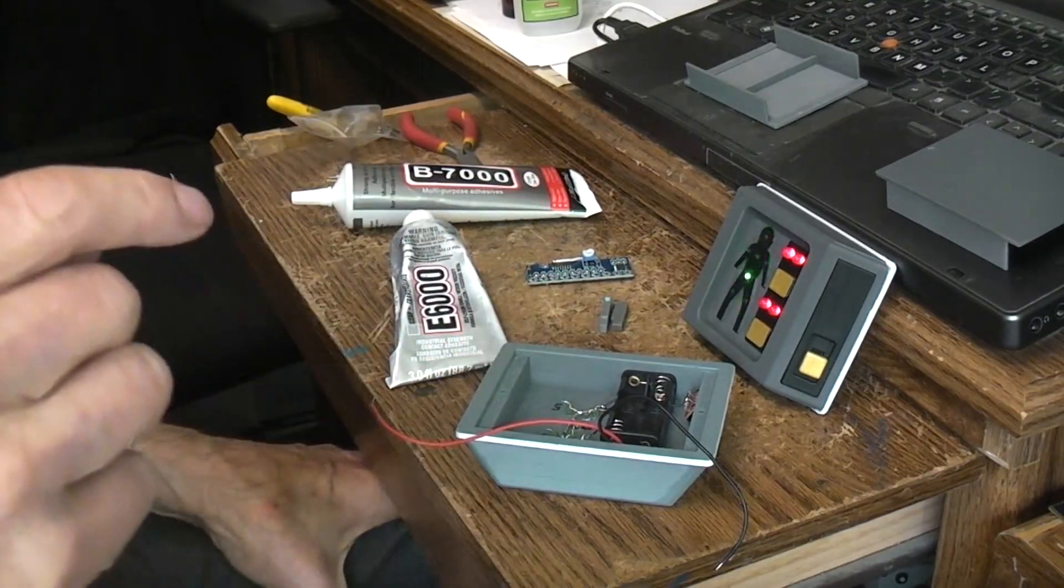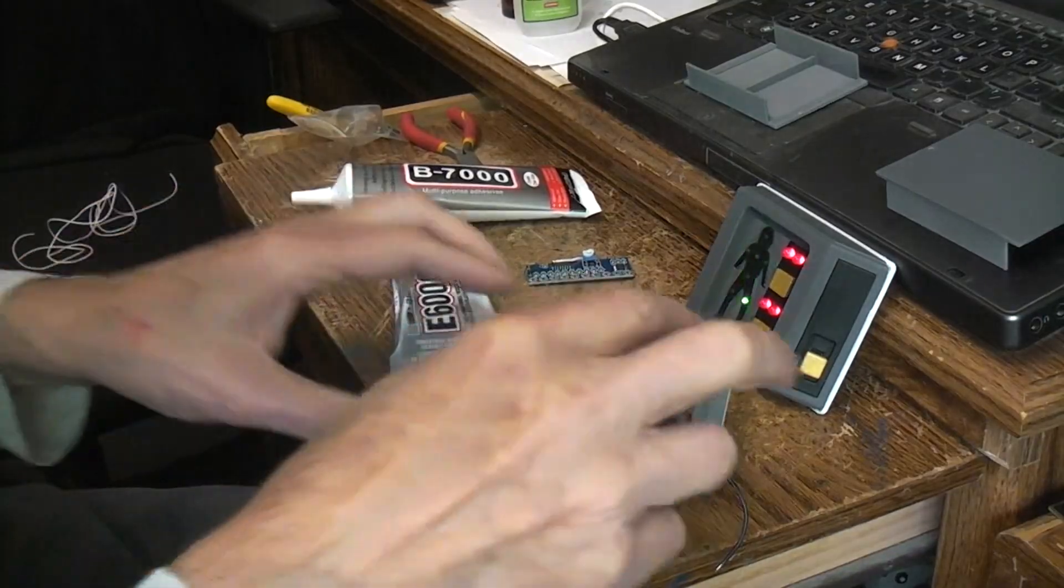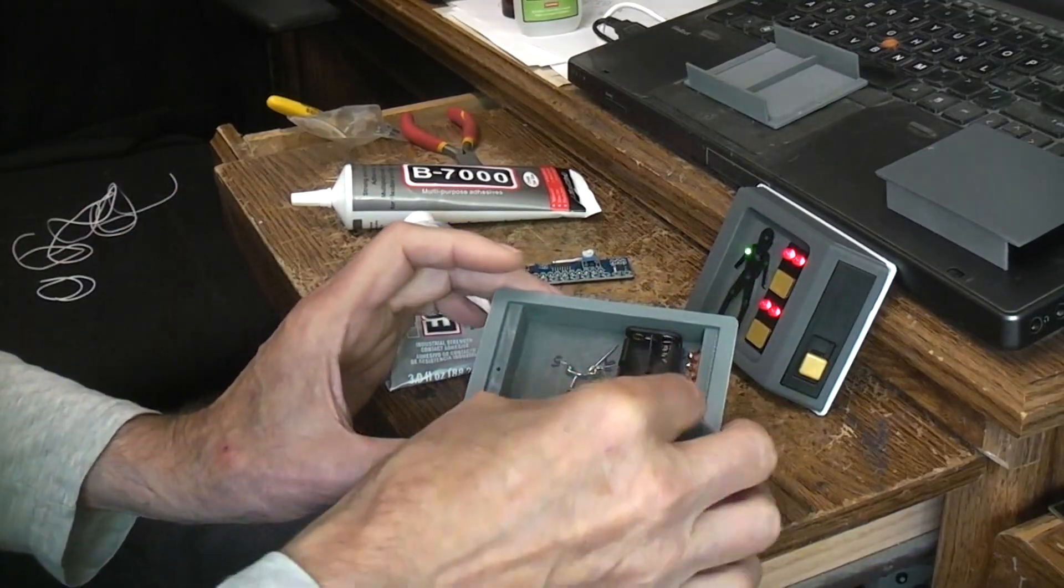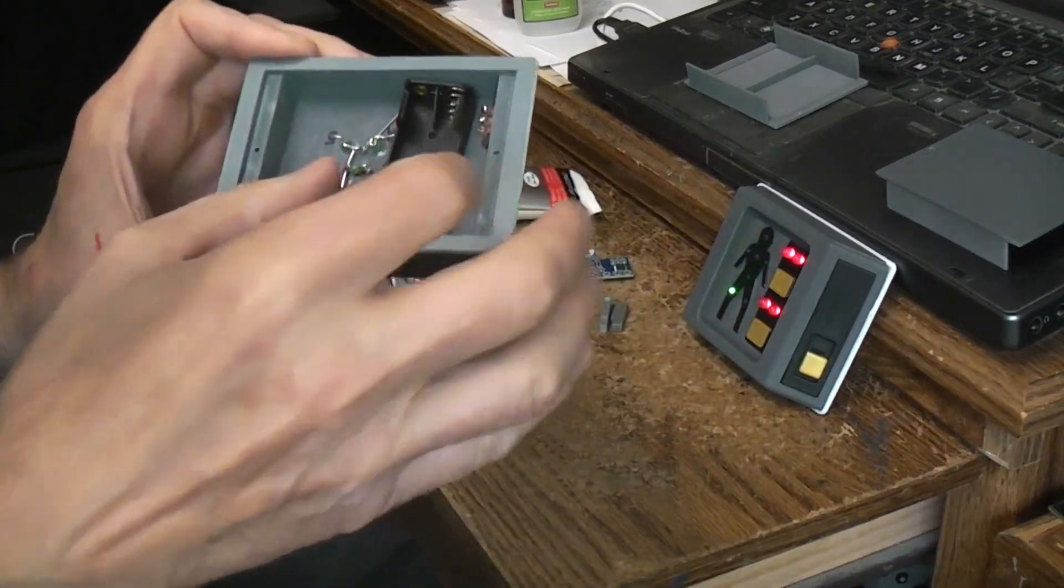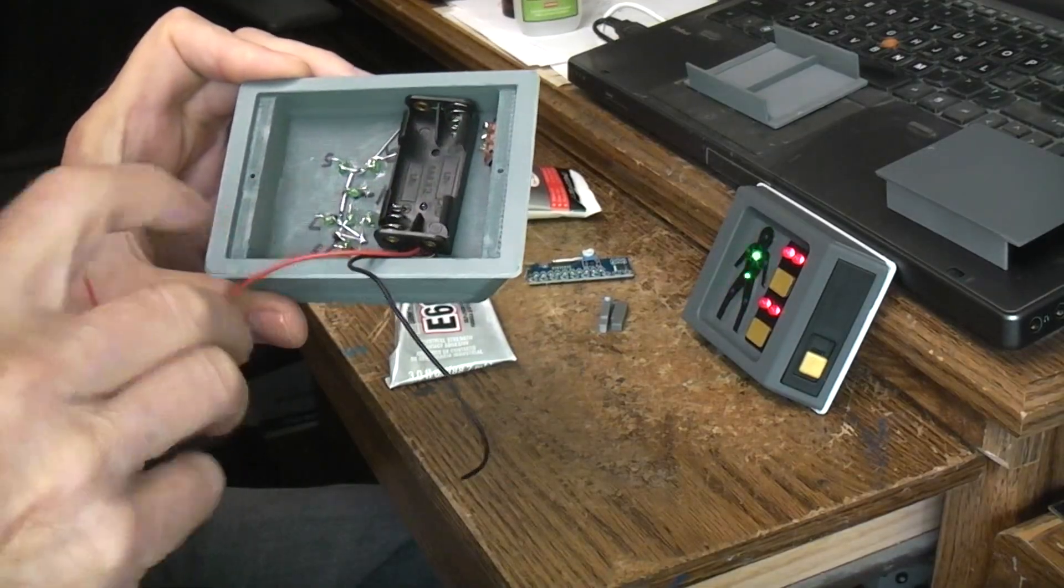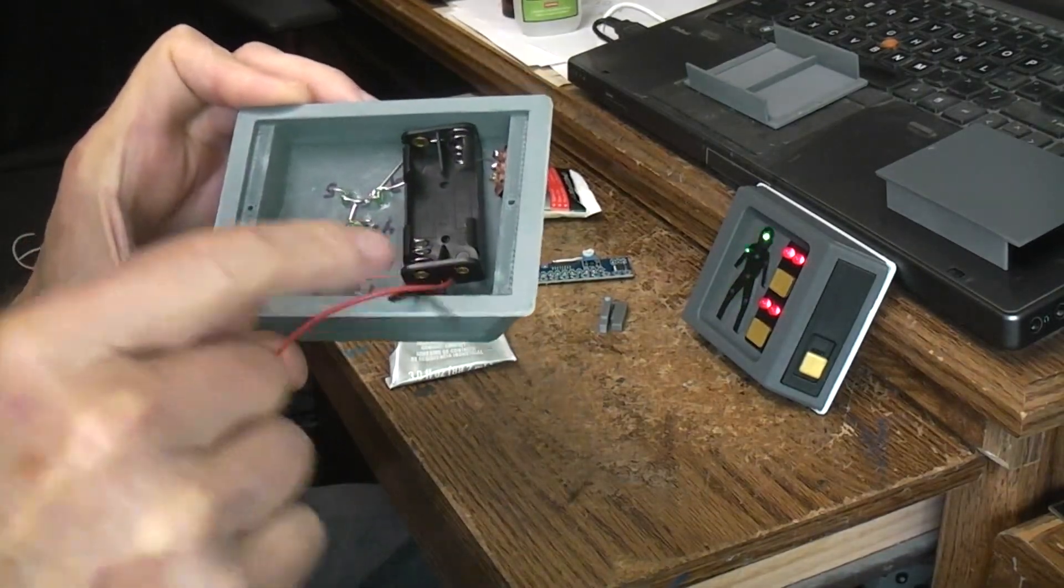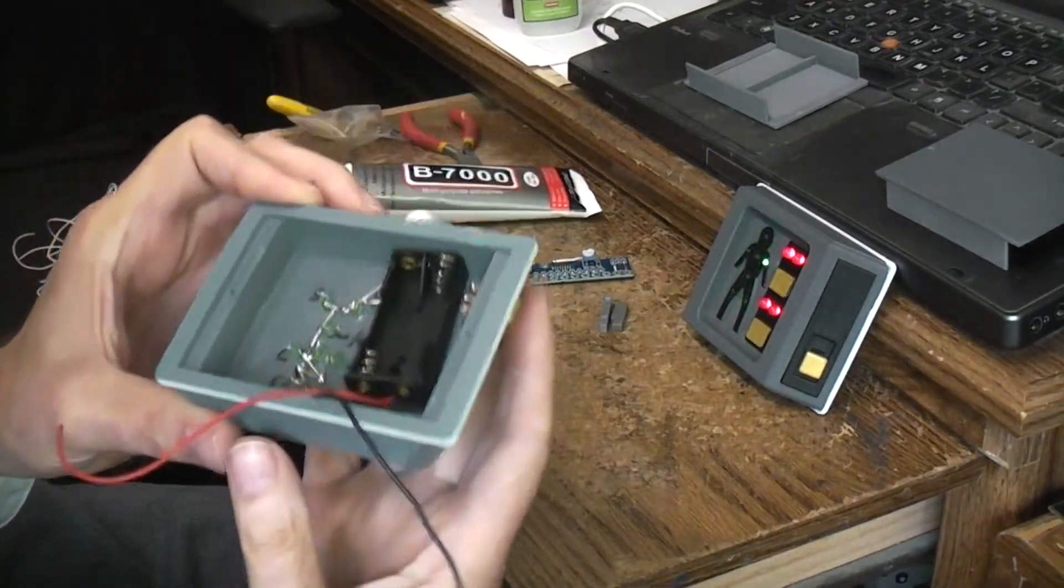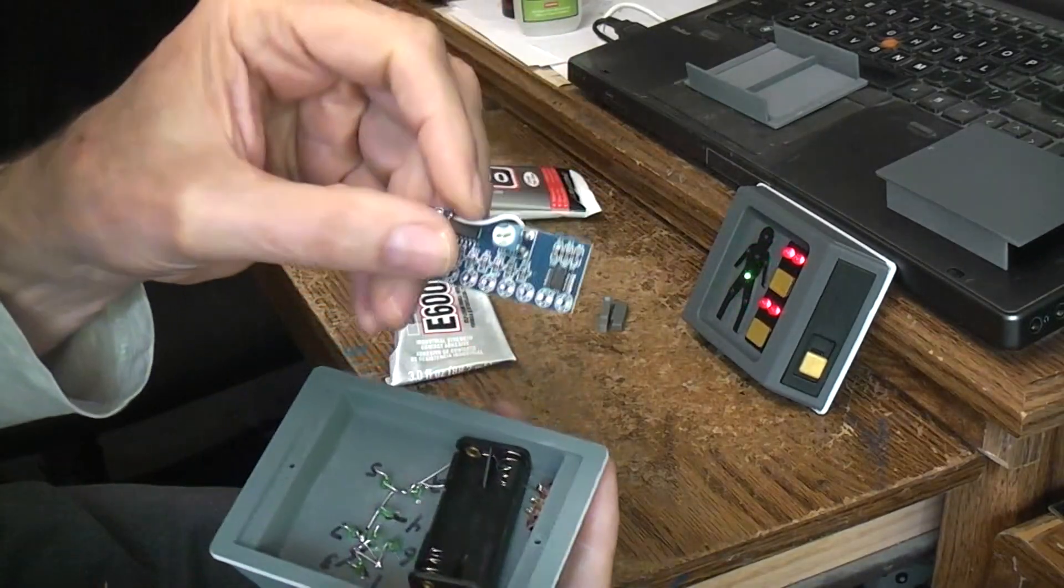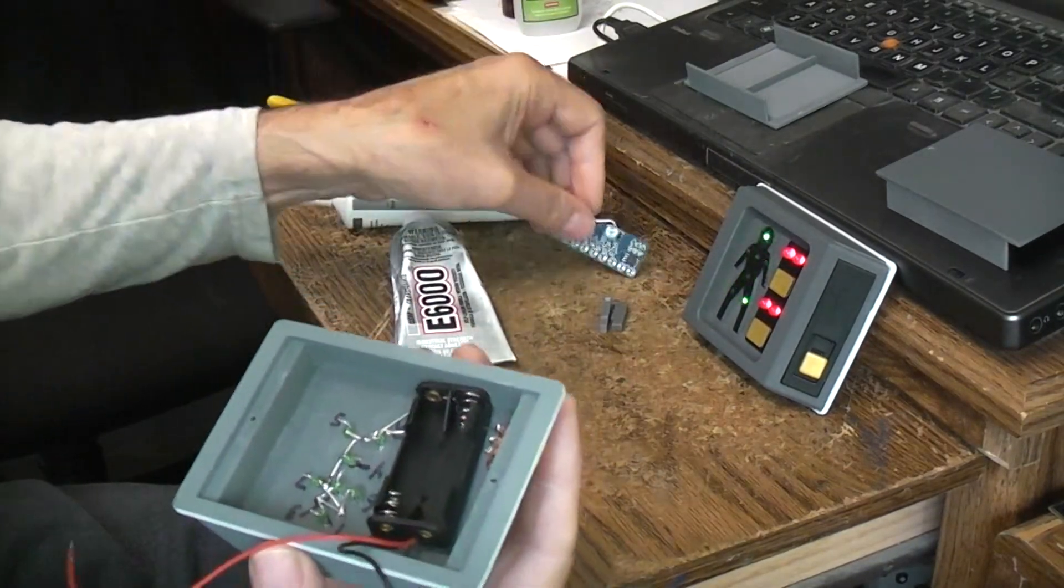That'll be the end of part two where I'm going to let this dry. When we come back, this battery pack should be in and I should have the red wire soldered over to the center terminal of the switch and the black wire tied to the ground. At that point we'll be talking about wiring in the sequencer.